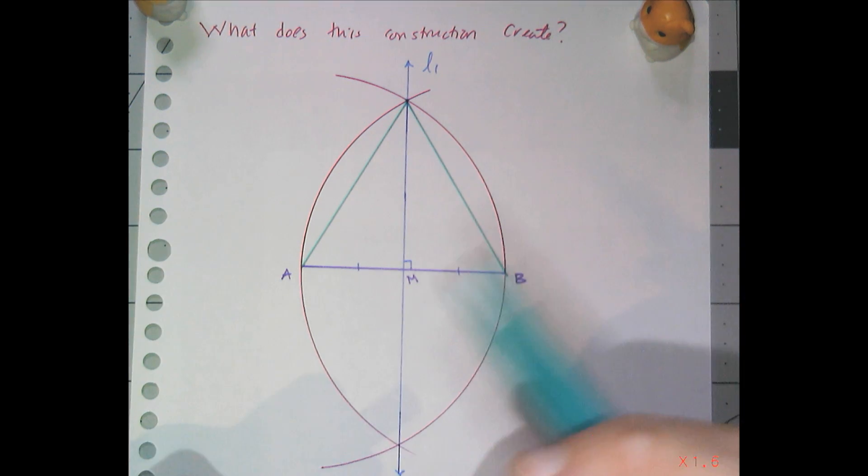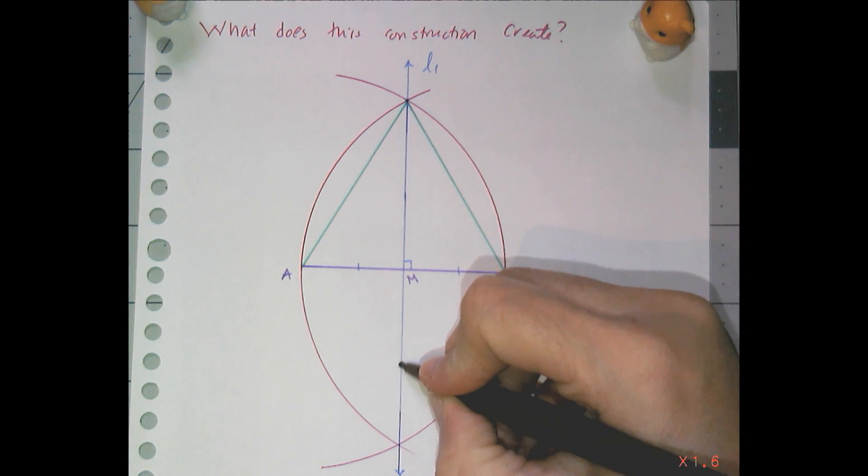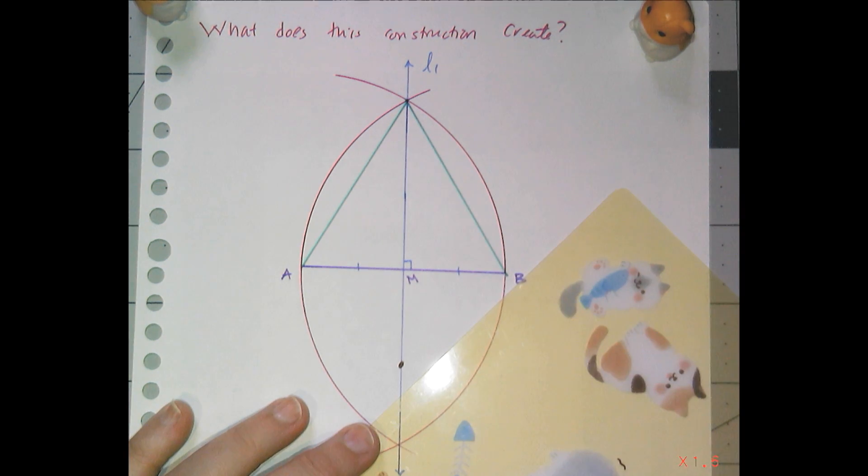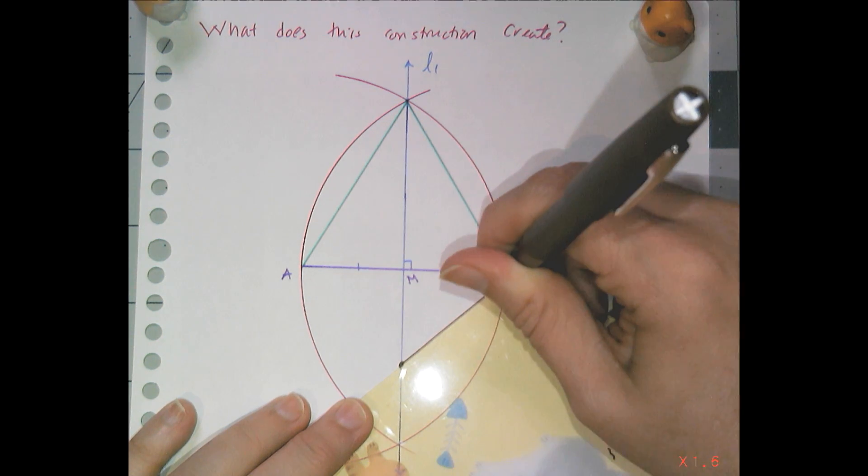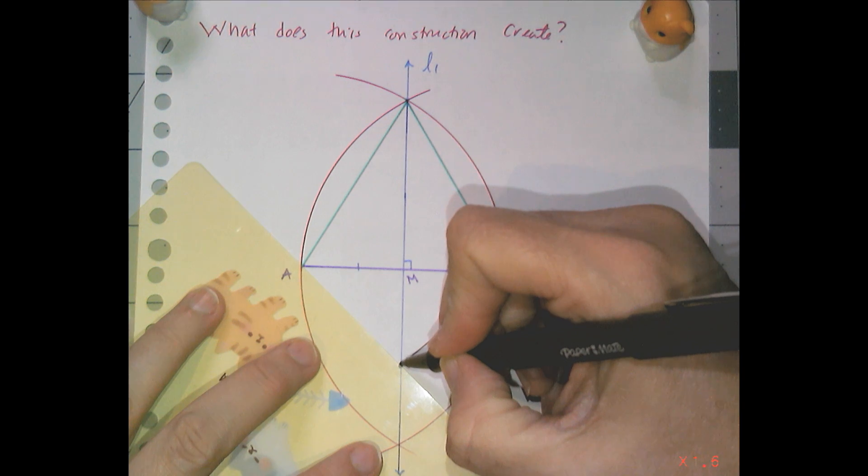So I can create an equilateral triangle that way. And as a matter of fact, I can create more than equilateral triangles. I can create isosceles triangles as well. Because if I pick any point on the perpendicular bisector, like a point down here, and I connect the endpoints to that point on that perpendicular bisector.